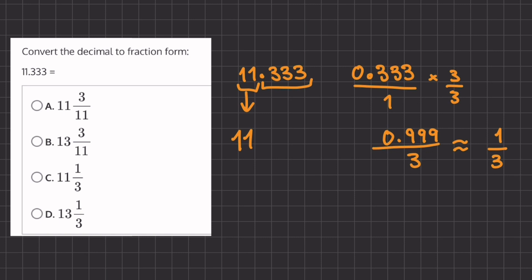And now let's take our two numbers and combine them. We have our 11 as our whole number and 1 third as our fraction. So this will be our final answer.